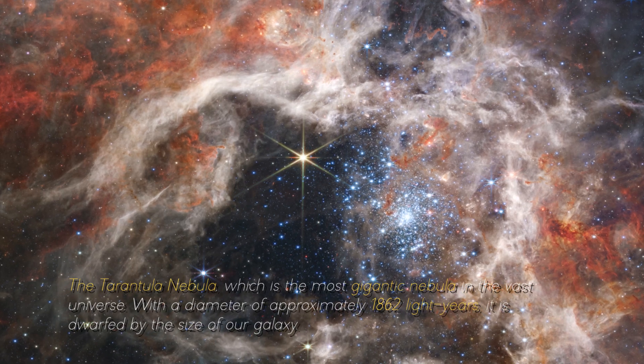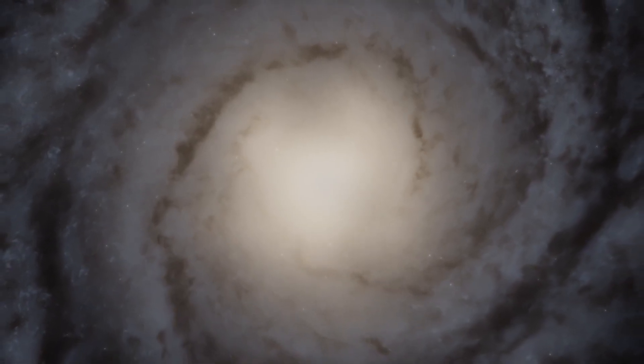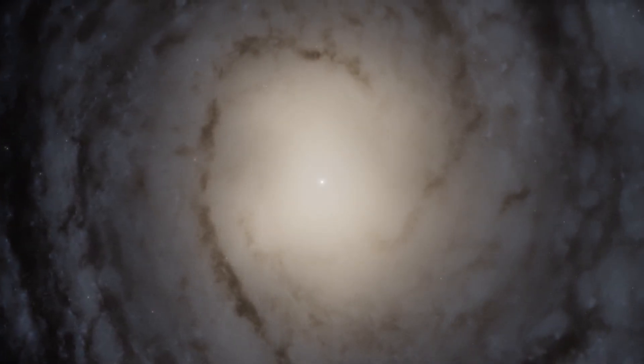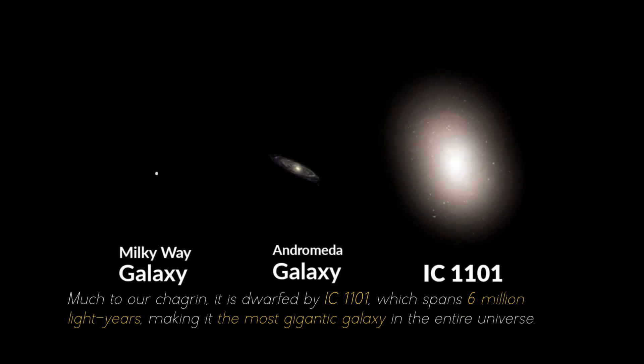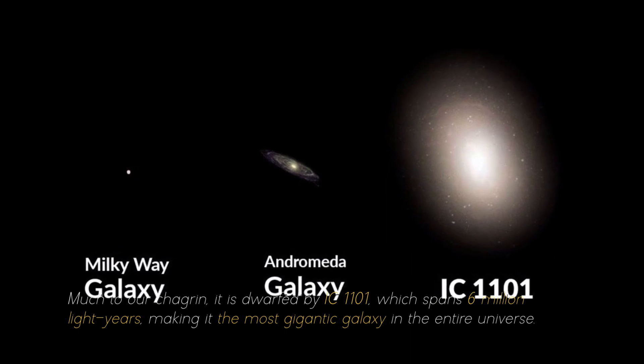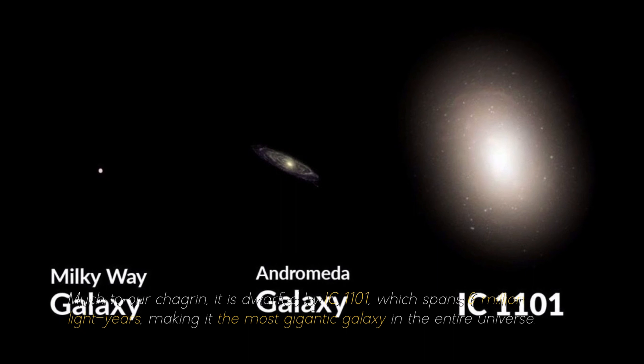It is dwarfed by the size of our galaxy, which spans some 105,700 light years. Much to our chart range, it is dwarfed by the IC 1101, which spans 6 million light years, making it the most gigantic galaxy in the entire universe.